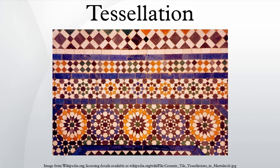A tessellation of a flat surface is the tiling of a plane using one or more geometric shapes, called tiles, with no overlaps and no gaps. In mathematics, tessellations can be generalized to higher dimensions.